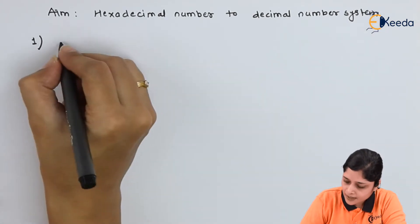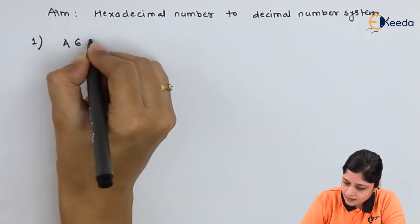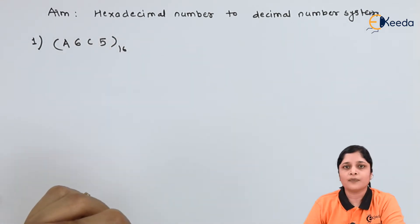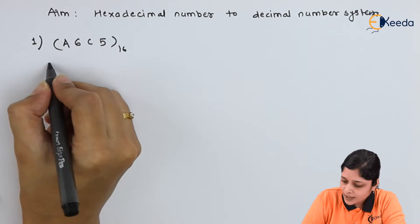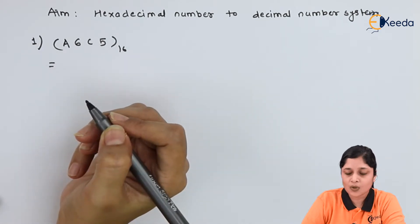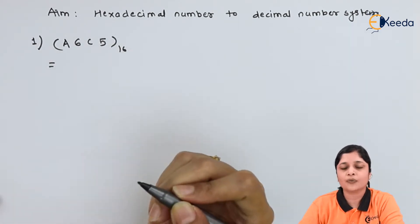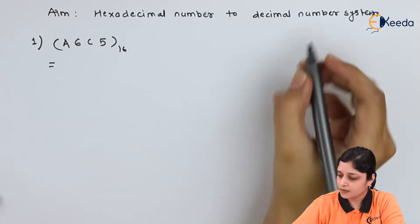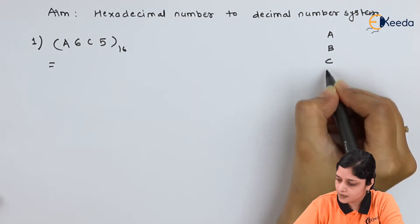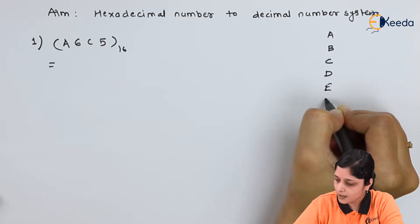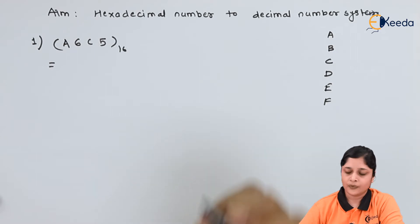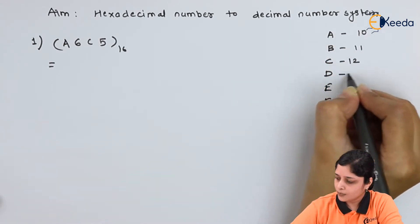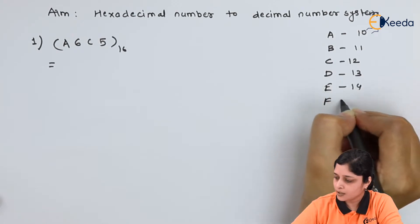Your first example is (A6C5)₁₆. You have to convert it into decimal number system. So first of all you should know value of A in decimal, value of C in decimal. So write down A, B, C, D, E, and F. Their values are 10, 11, 12, 13, 14, 15.